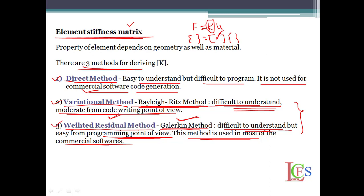These are the basic methods for deriving stiffness: direct method, variational method, and weighted residual method. The direct method is easy to understand but difficult to program. The Rayleigh-Ritz and Galerkin approaches are difficult to understand but moderate or easy from a programming point of view, which is why they are used for all commercial software.